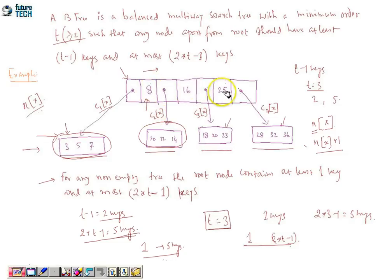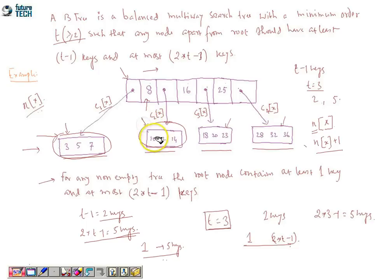We can see here the keys are 8, 16, 25 — that is increasing order. All the keys that appear in the second subtree should be greater than 8 and less than or equal to 16.